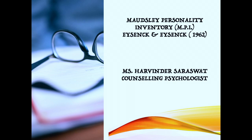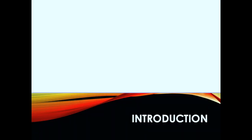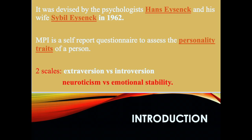Hello friends. In this video we are going to learn how to conduct, administer, score and interpret the Maudsley Personality Inventory. The MPI is a self-report questionnaire to assess the personality traits of a person. It has two scales: extroversion versus introversion, and neuroticism versus emotional stability.